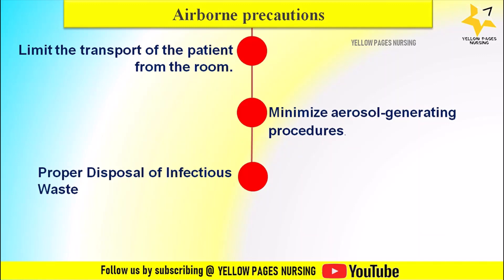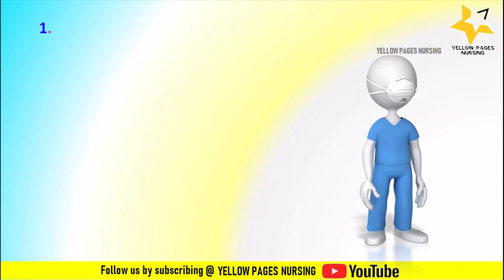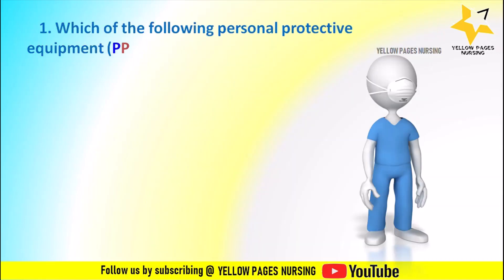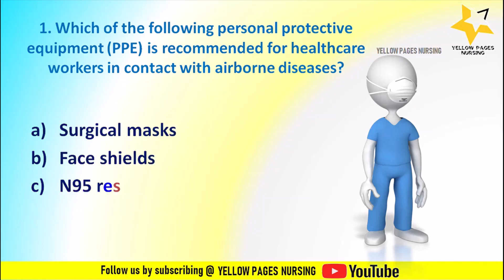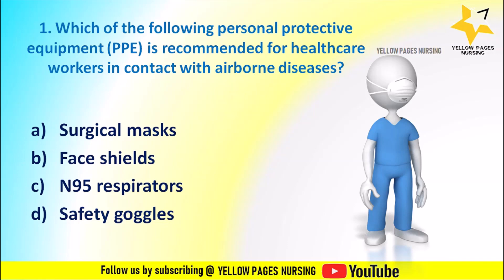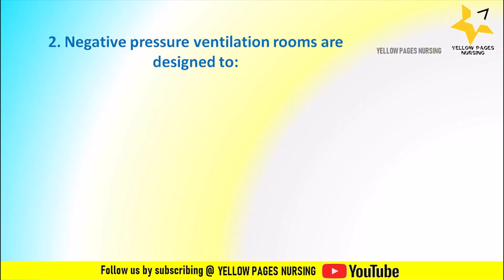Here are a few multiple choice questions for practice — you can answer in the comment box. Question 1: Which of the following personal protective equipment is recommended for healthcare workers in contact with airborne diseases? Options: A. Surgical masks, B. Face shields, C. N95 respirators, D. Safety goggles.